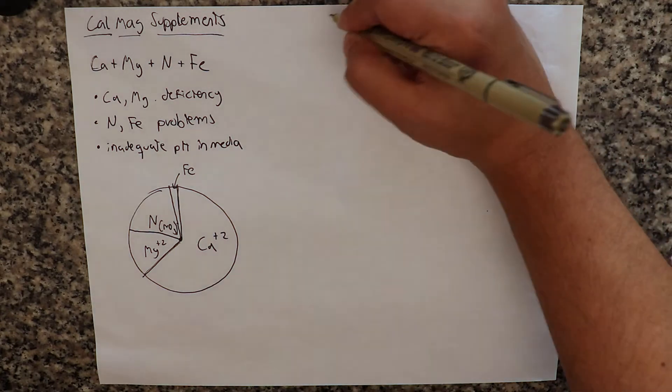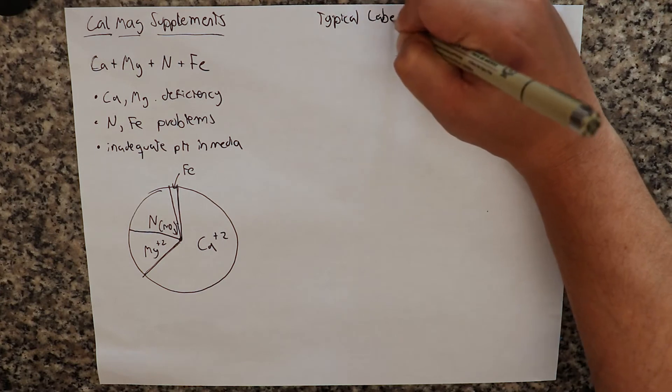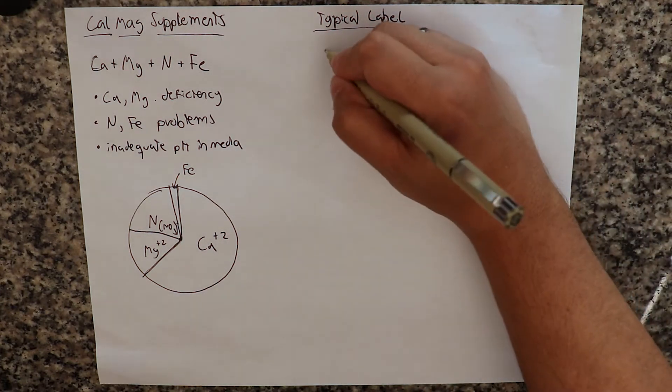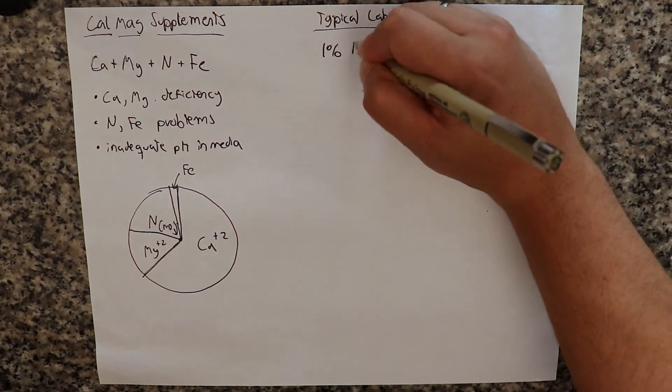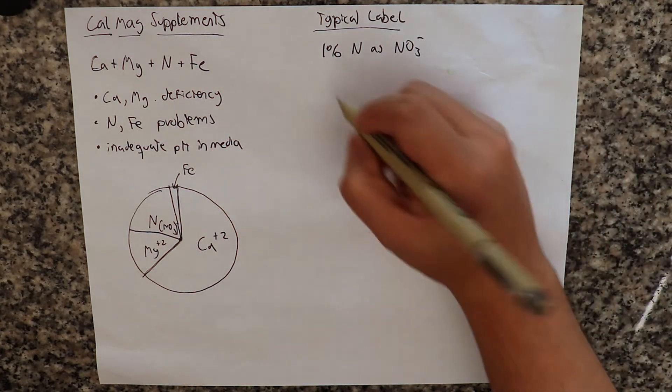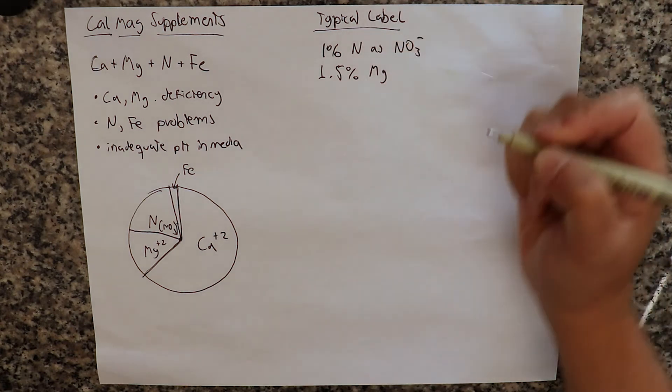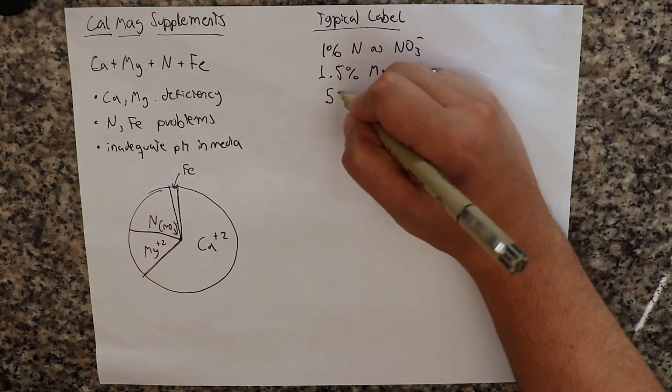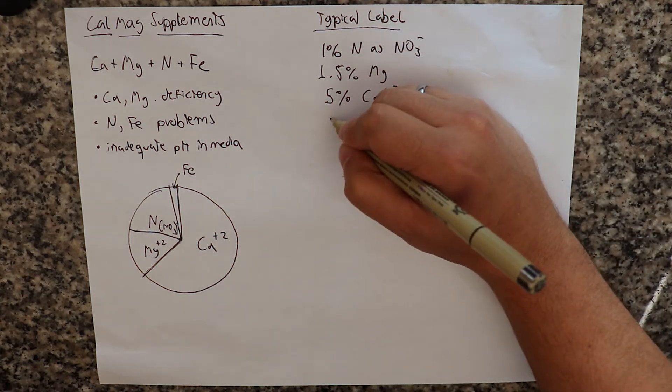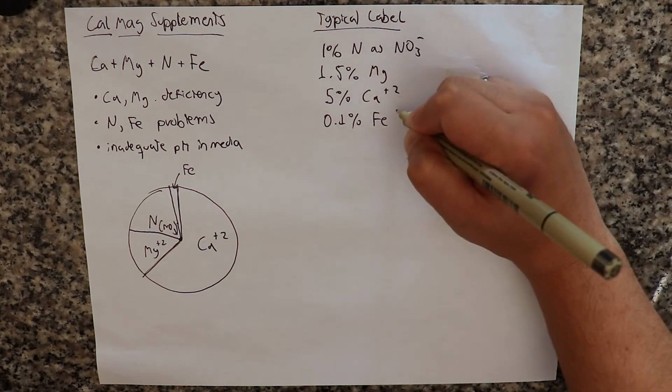So let's talk about what the typical label is like. So normally we will have something like 1% of nitrogen as nitrate. We will have around 1.5% magnesium, 5% calcium. So you can see here that they have a lot of calcium.